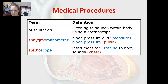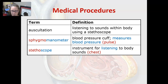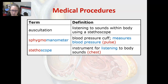Auscultation is listening to sounds within the body using a stethoscope. Obviously, here we'd be listening to the heart sounds. A sphygmomanometer is a blood pressure cuff, and it measures blood pressure. Sphygmo means pulse, and manometer is an instrument to measure pressure. Stethoscope is an instrument for listening to body sounds.